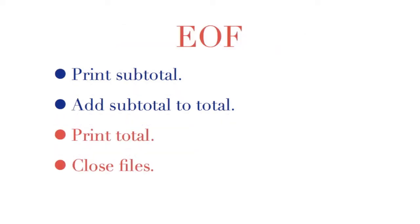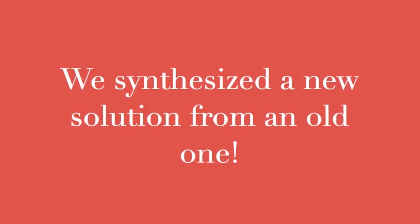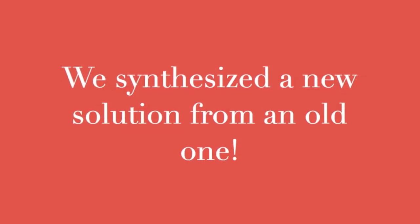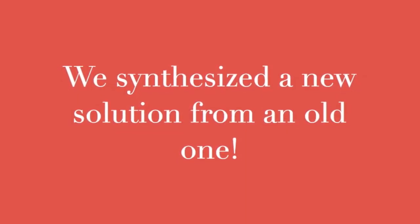When we reach the end of the file, we need to print out the subtotal for the last salesperson and then add that subtotal to our total. And you have now created the Control Break program through synthesis.